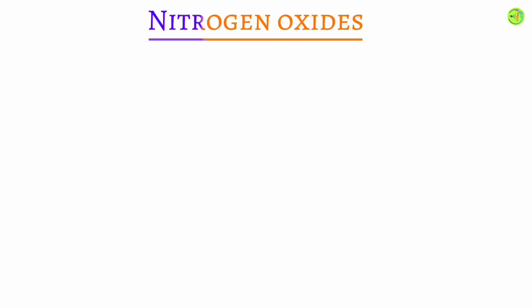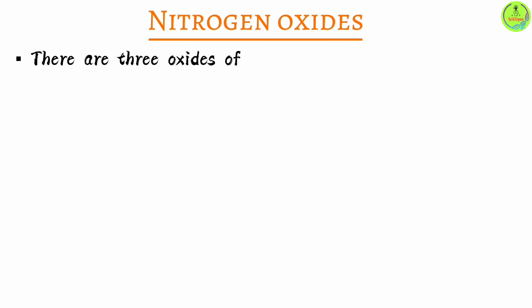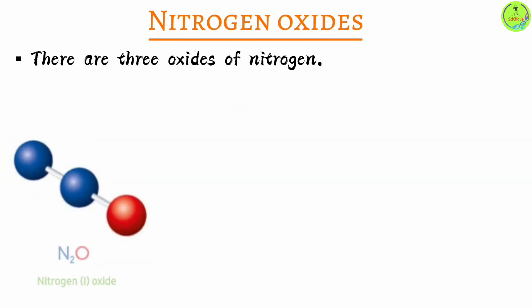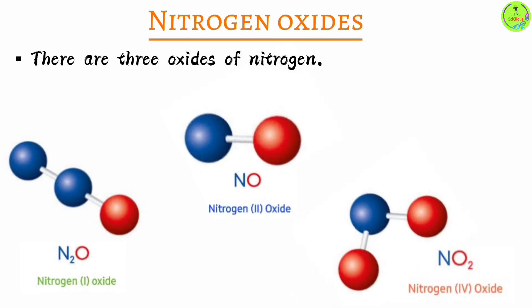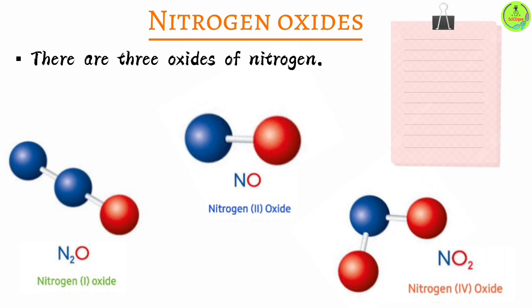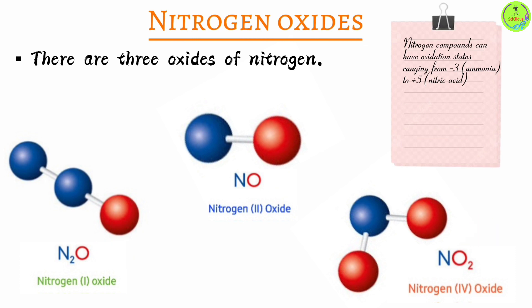The oxides of nitrogen. An oxide is simply a compound that contains oxygen and another element. Nitrogen has three oxides: nitrogen one oxide, nitrogen two oxide, and nitrogen four oxide. Their chemical formulae follow from nitrogen's ability to have multiple oxidation states — in the first compound it has an oxidation number of one, in the second two, and in the third four.